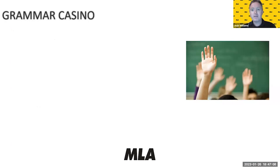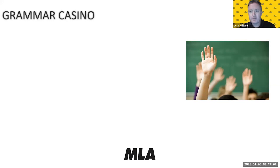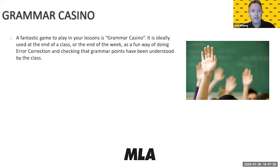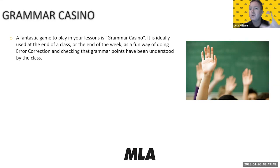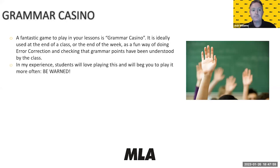The last game — Grammar Casino, also called Grammar Auction — is one of my favorites to play when covering a class without anything prepared. It's ideally used at the end of a class, at the end of the week, or at the end of a unit, and it's a fun way to do error correction — testing grammar you've been studying. It works particularly well for present perfect or conditionals, and you can also use it for vocabulary or spelling.